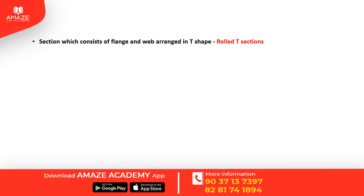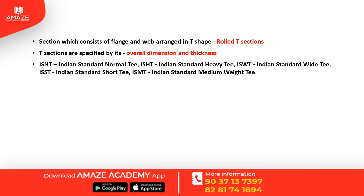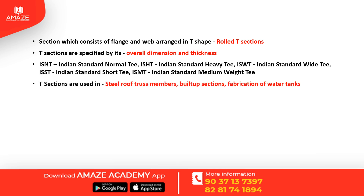A section consisting of a flange and web arranged in a T-shape is a rolled T-section. T-sections are specified by overall dimension and thickness. The types are ISNT (Indian Standard Normal T), ISHT (Heavy T), ISWT (Wide T), ISST (Short T), and ISMT (Medium Weight T). T-sections are used in steel roof truss members, built-up sections, and fabrication of water tanks.